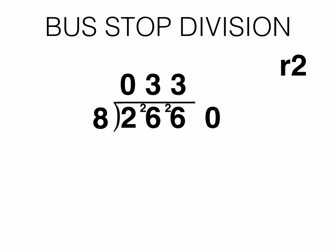As stated previously, you now need to place a 0 into the tenths column and a decimal point between the units and the tenths. Carry across the 2 and calculate how many 8's divide into 20, which is 2. Then put a 0 as a placeholder into the hundredths column and carry across the remainder of 4 to make 40. Calculate how many 8's divide into 40, which is 5. You then have an answer of 33.25.